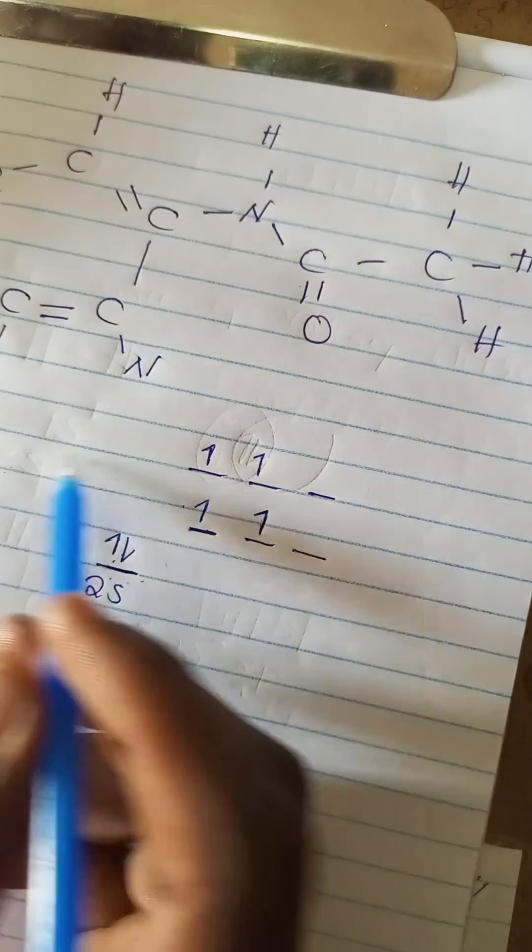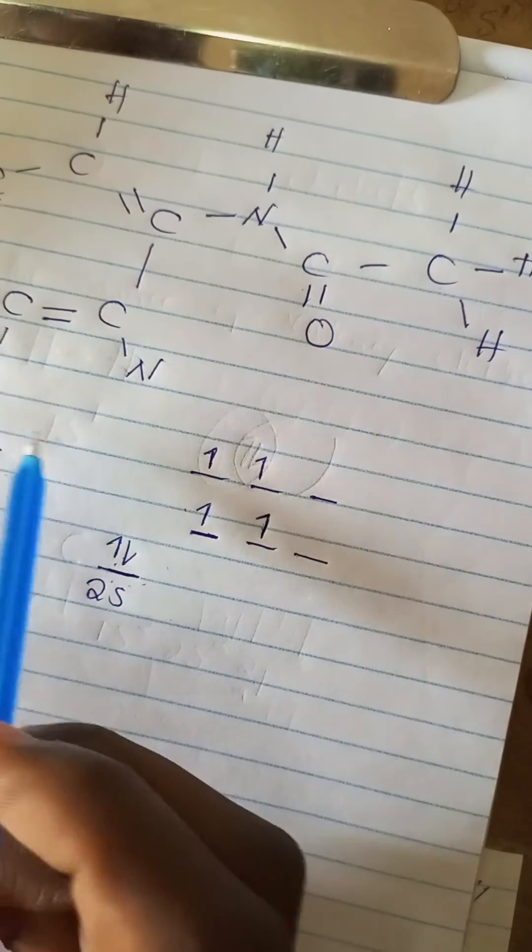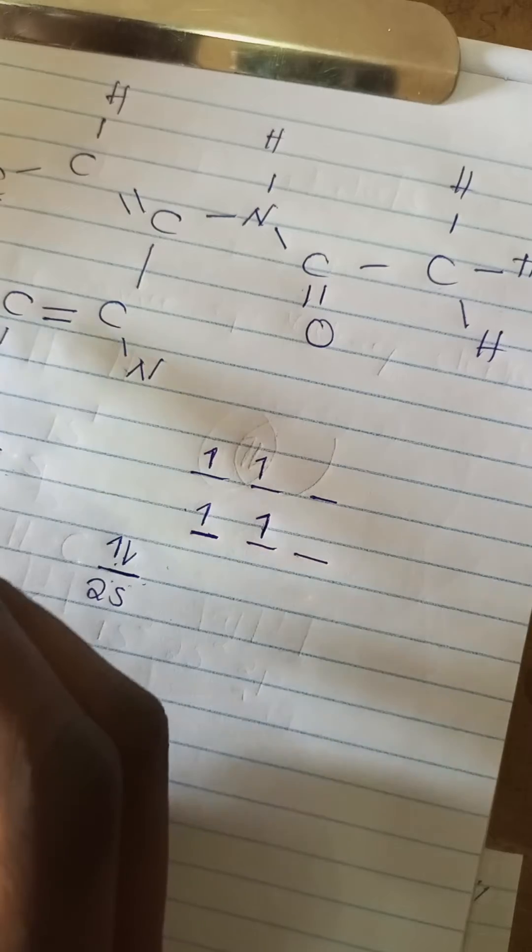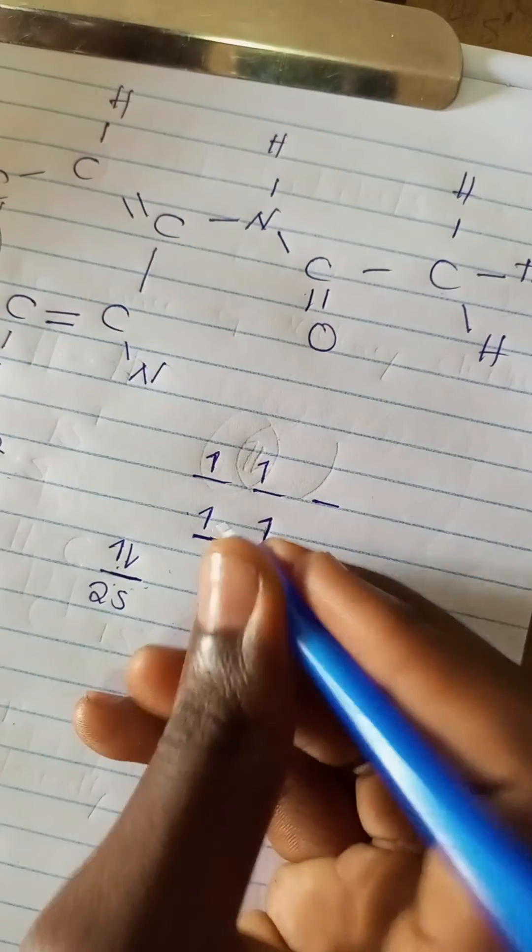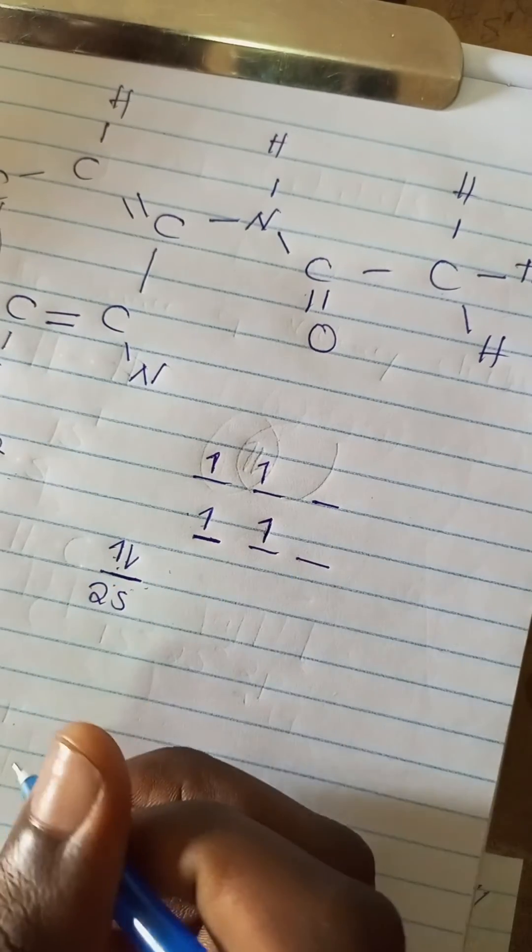So these are two electrons. Then how many electrons are coming from there, from there? So these are two I've shown them.